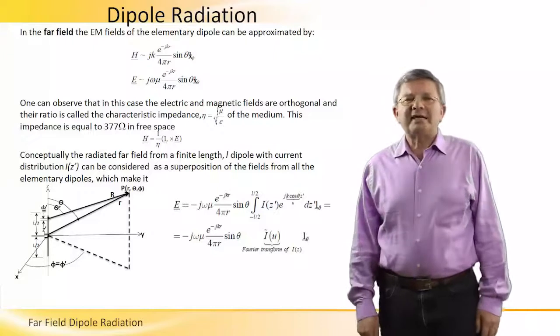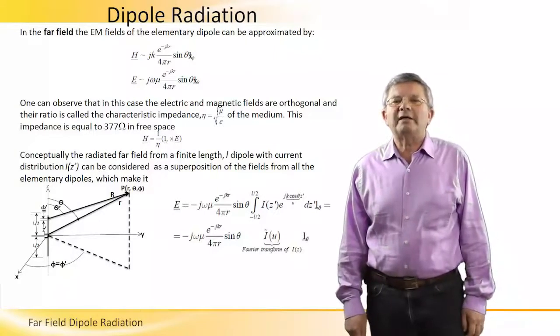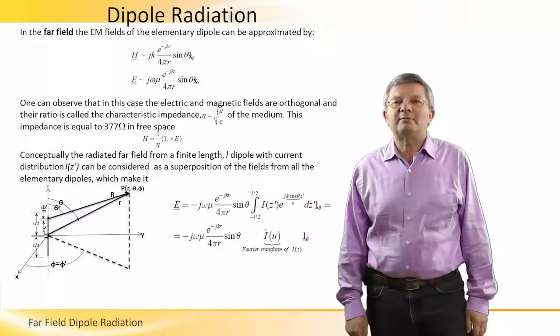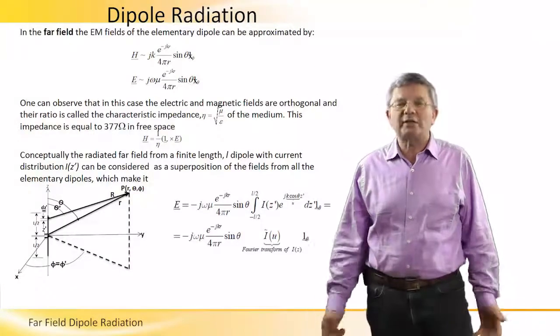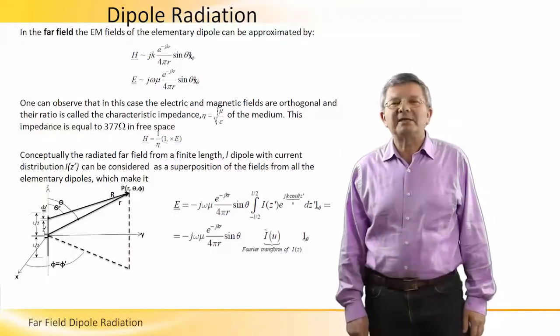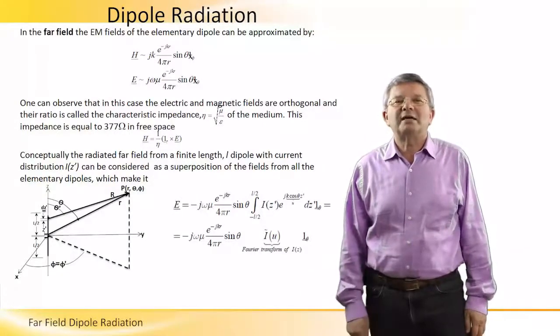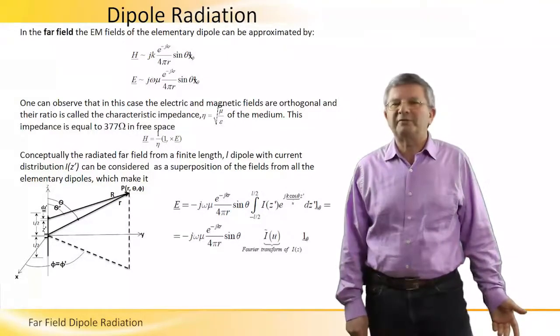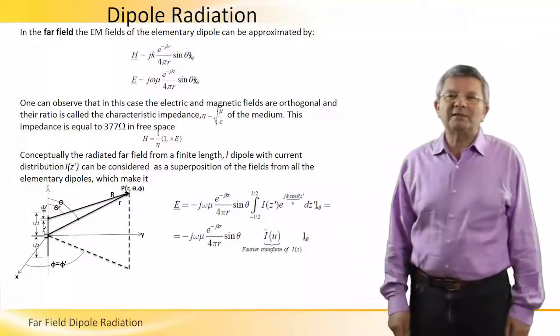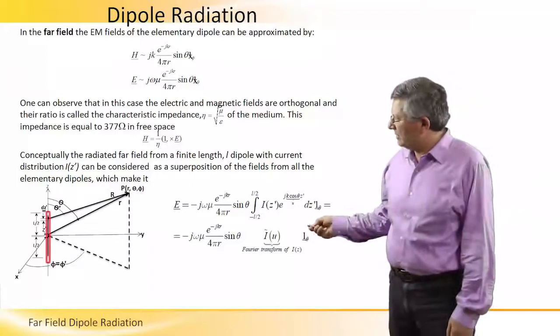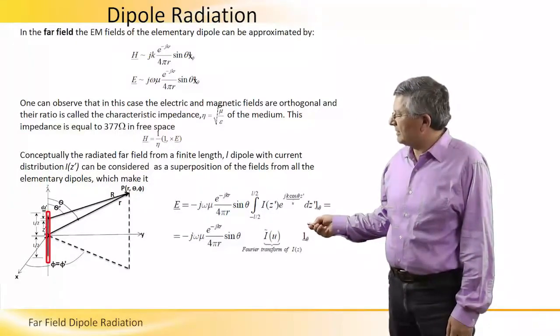Conceptually, the radiative far field for a finite length L-dipole, which is an extension of the elementary dipole with arbitrary current distribution I(z'), can be considered as a superposition of the fields from all the elementary dipoles which make the entire current distribution.